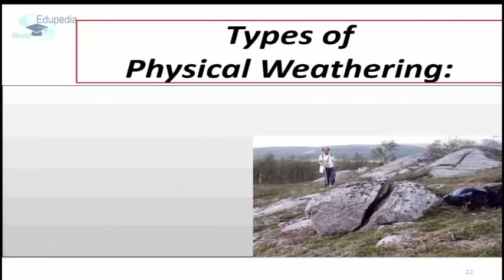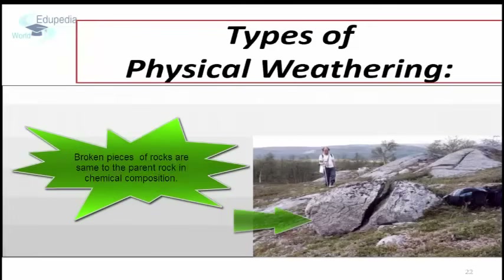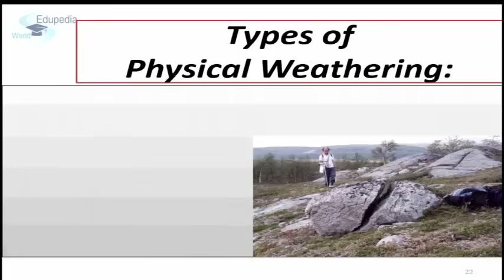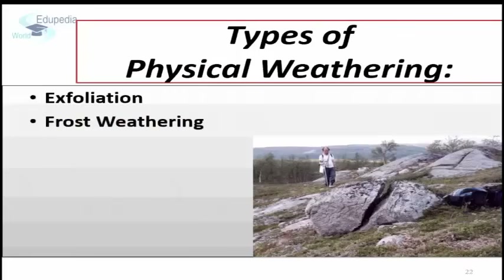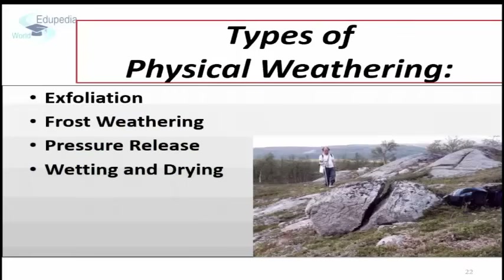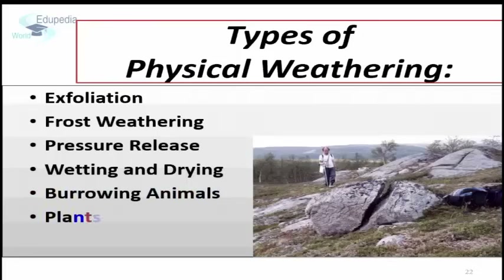Physical weathering is the breaking up of rocks through physical processes. Here, the broken pieces of rocks are similar to the parent rock in chemical composition. Physical weathering may happen through exfoliation, frost weathering, pressure release, wetting and drying, by burrowing animals, and by plants.